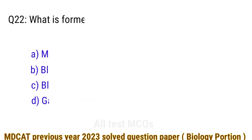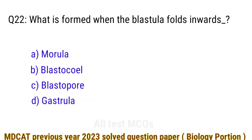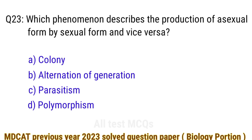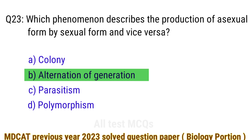Question number 22. What is formed when the blastula folds inward? Question number 23. Which phenomenon describes the production of asexual form and bisexual form alternating with each other? The right answer is option B: alternation of generations.